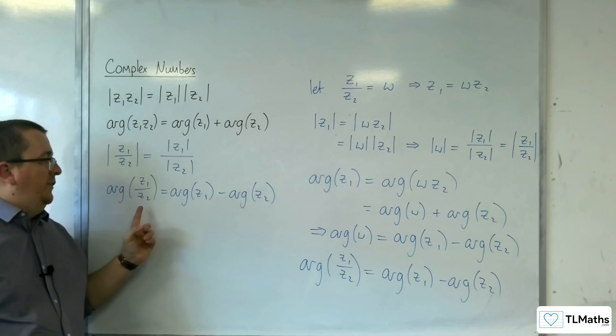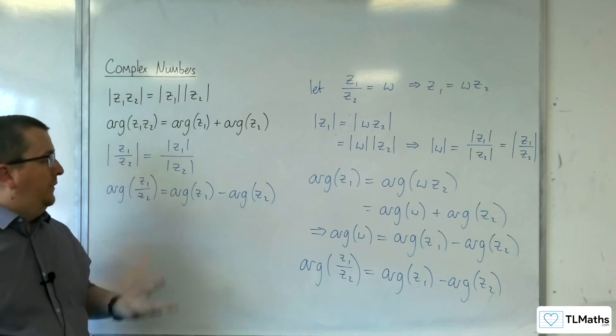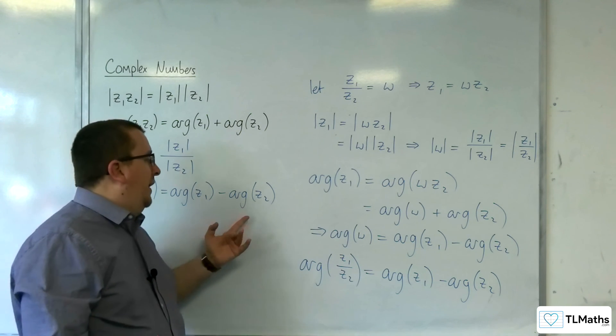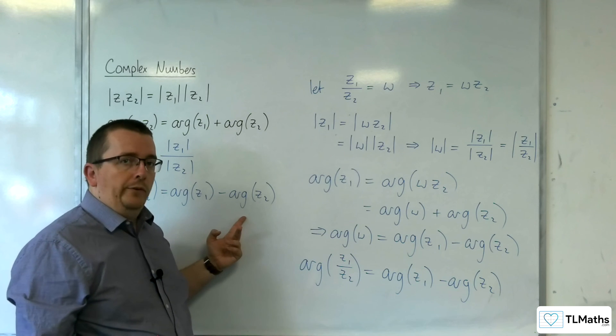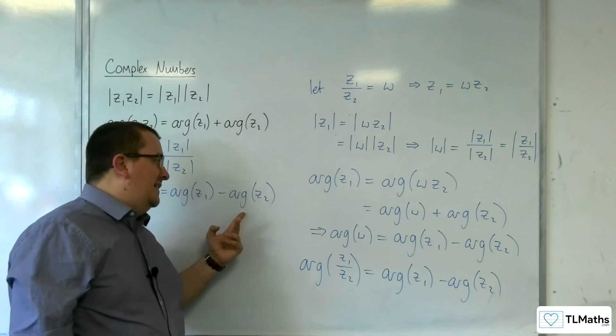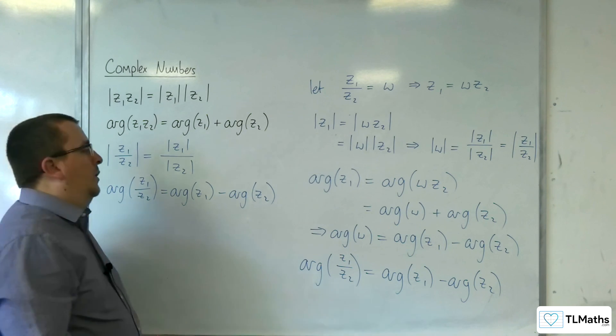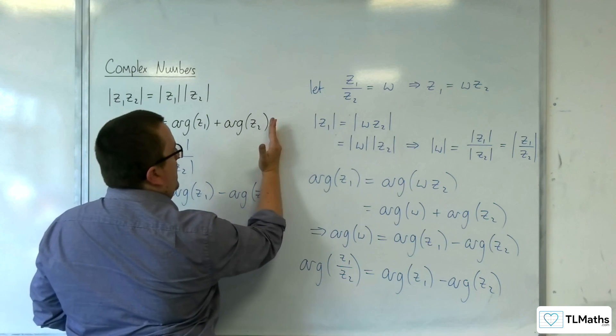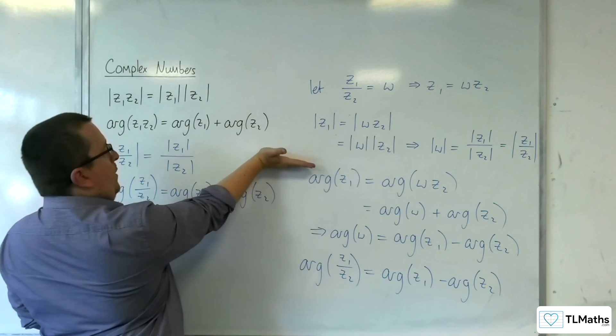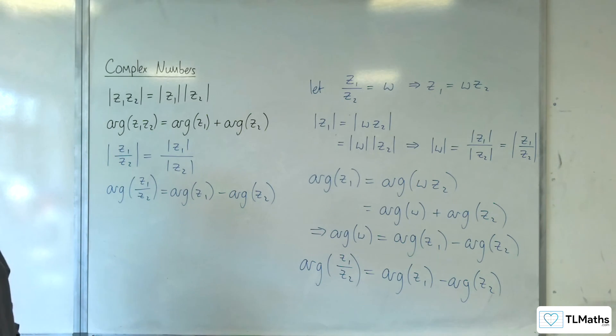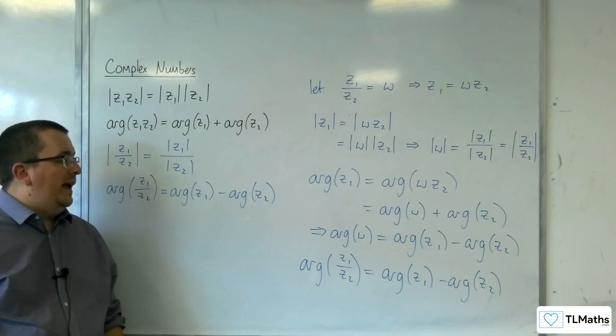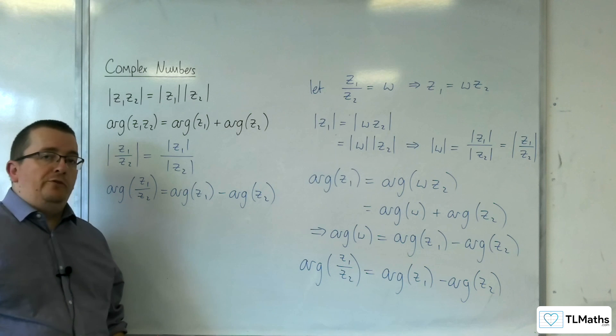So what it means then geometrically when you're dividing by the complex number here, complex number Z2, is you are rotating anticlockwise by the negative argument of Z2, which is effectively the same as rotating clockwise by the argument of Z2. So rather than going round that way, we're now actually going round that way. And so that's how we can derive the similar result for division.